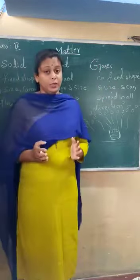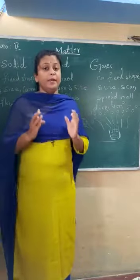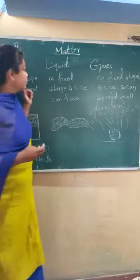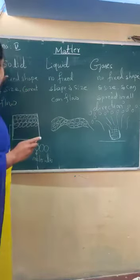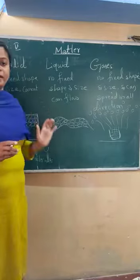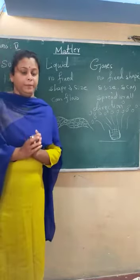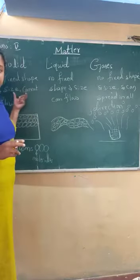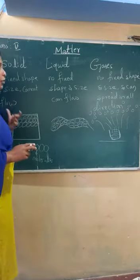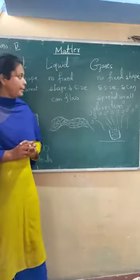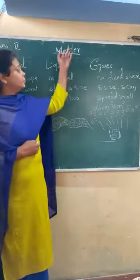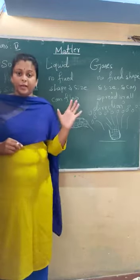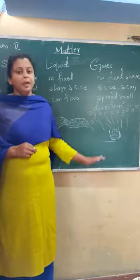What are these three states actually made up of? We will learn this in detail in this video. First, what are solids? Solid has a definite shape. Solid has a definite or fixed shape and size, and it cannot flow. For example, I can give you this board as a solid. This board has a definite shape.